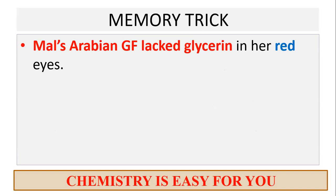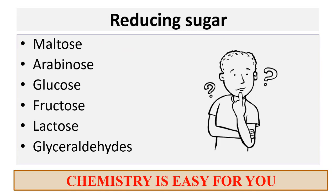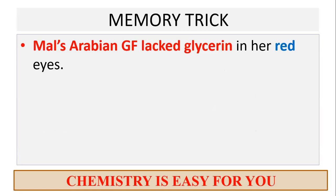The memory trick is to memorize this sentence: 'Mal's Arabian girlfriend lacked glycerin in her red eyes.' Here, Mal stands for maltose, Arabian stands for arabinose, G for girlfriend stands for glucose, F stands for fructose, lact is lactose, and glycerin stands for glyceraldehyde. Red stands for reducing sugar. So keep this one sentence in your mind and if you see the options, just think of this sentence — and there you go, you know which of them is a reducing sugar.